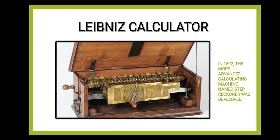Our next device is Leibniz's calculator. In 1692, a more advanced calculating machine named the Stepped Reckoner was developed by a German mathematician whose name was Leibniz. That is why this device was named Leibniz's calculator. It could perform all four basic mathematical operations: addition, subtraction, multiplication and division.